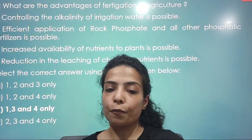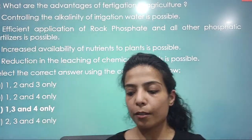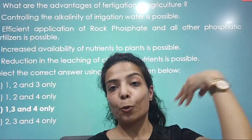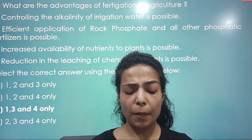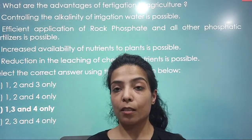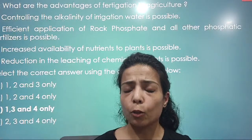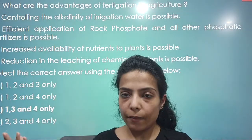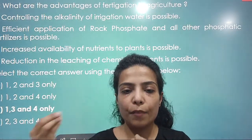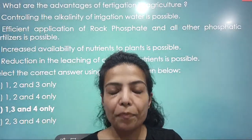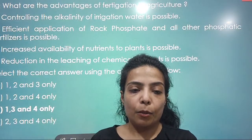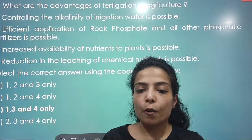Next was: what are the advantages of fertigation in agriculture? Agriculture was one of the favourite topics of UPSC in this exam. They asked a lot of things about agriculture, sustainable development, and waste material usage. The questions that came were related to three things: agriculture, sustainable development, and waste disposal. Apart from that, species and ecology equations were also there. So let's start with this question — what are the advantages of fertigation in agriculture?